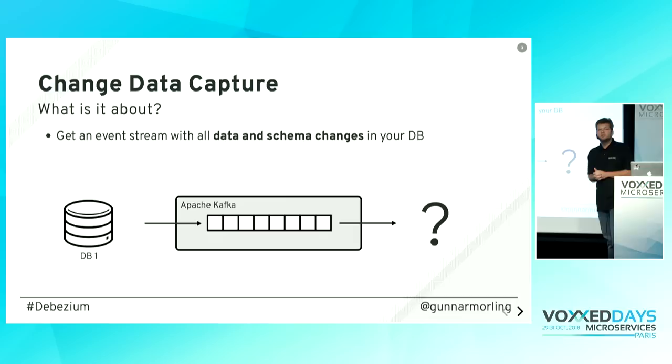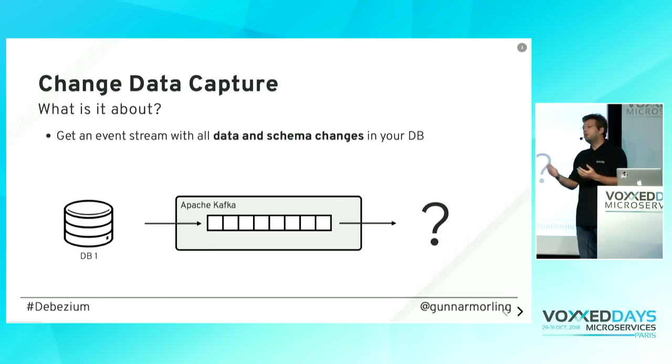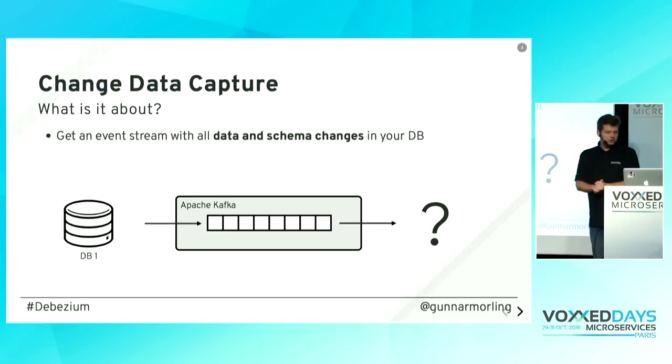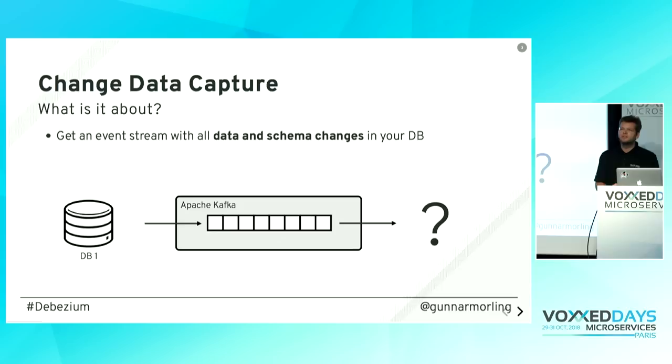What is change data capturing? The idea is quite simple: you have your data in your database — customers, orders, products — and you would like to be notified whenever any data item changes: a new customer gets created, an order gets updated, something gets deleted. You want to be notified and react to those events, and usually you will stream those events into some sort of messaging broker such as Apache Kafka.